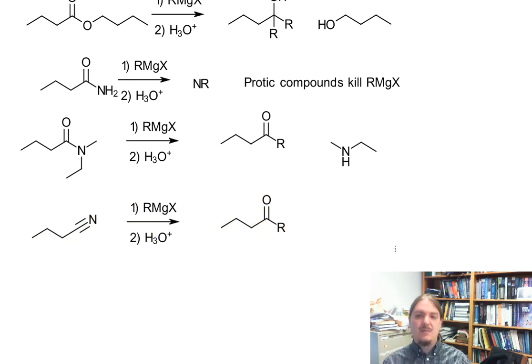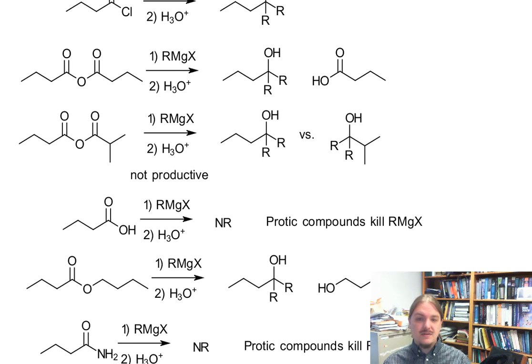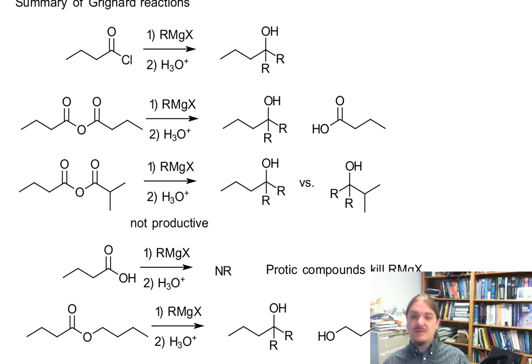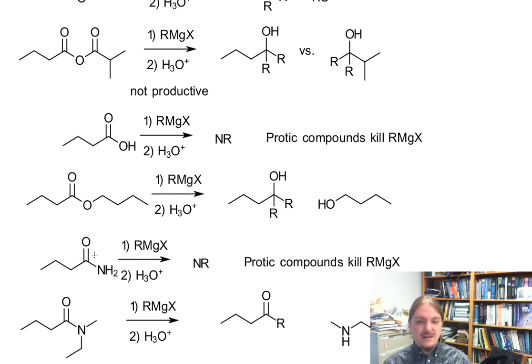This is my summary of Grignard reagents and carboxylic acid derivatives. Acid chlorides, anhydrides, and esters form tertiary alcohols, though mixed anhydride reactions are sometimes not productive. Carboxylic acids and amides with NH bonds are protic molecules and destroy Grignard reagents. And then tertiary amides and nitriles react to form ketones.